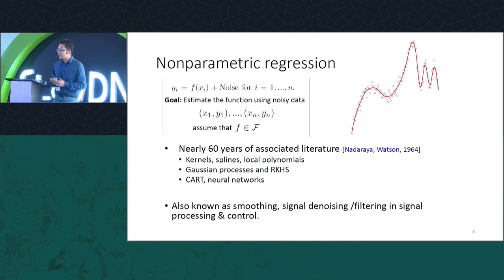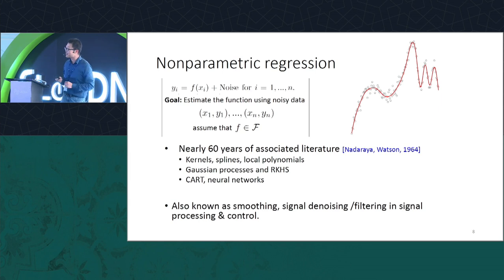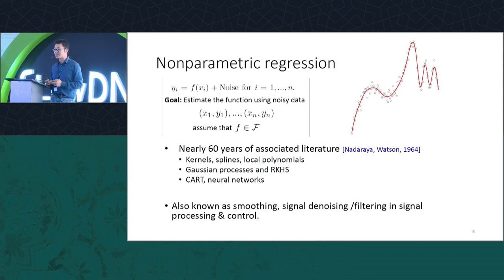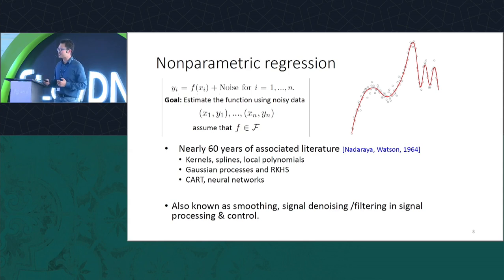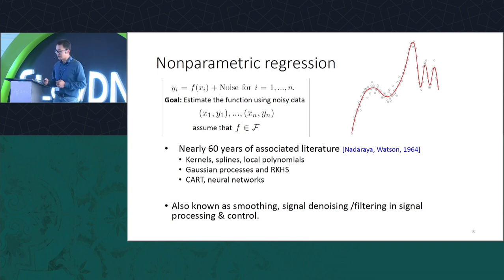There are a lot of classical methods for this: kernels, splines, local polynomials, and so on. Many of these methods behave nearly optimally for different function classes. Many of you from communities like signal processing and statistics know this under different names — smoothing, denoising, filtering. There's also a control angle to this: you can think of it as filtering a signal with a feedback loop type control.